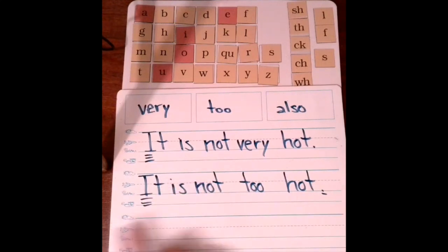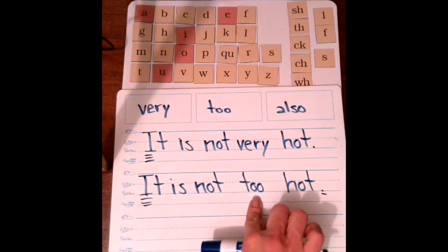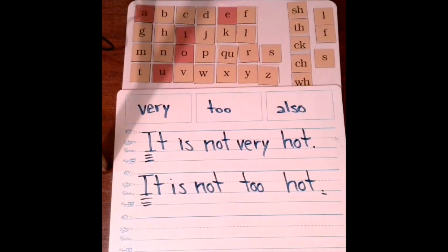Notice it's the exact same sentence except for I exchanged very with the word too. And notice this too has two o's. So the word too can be put in place of the word very. It is not very hot. It is not too hot. It means the same thing.